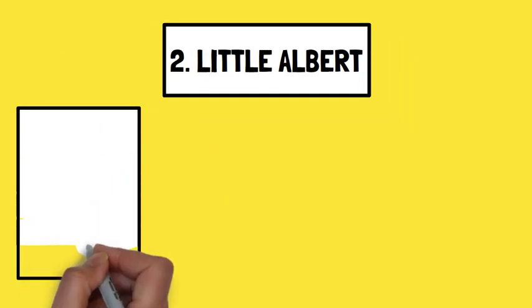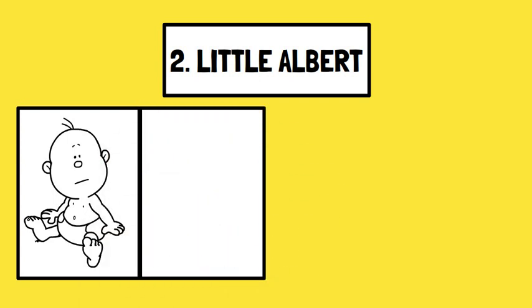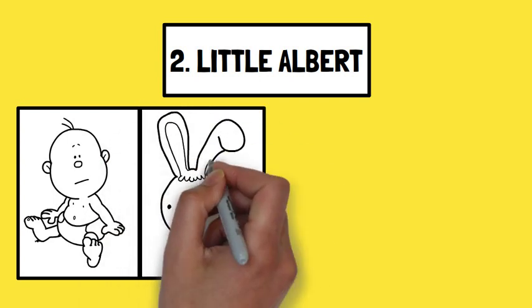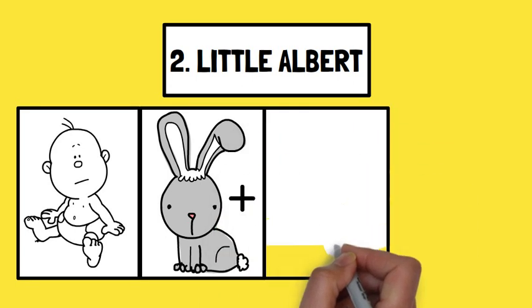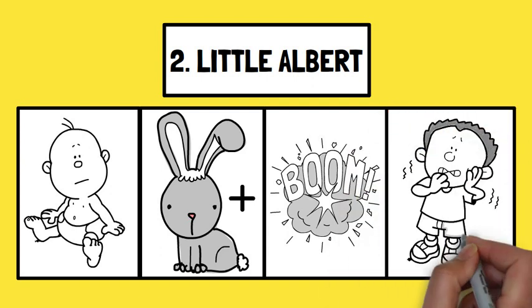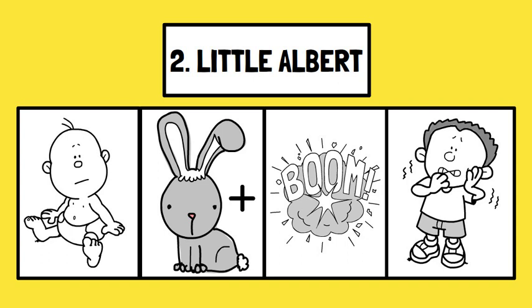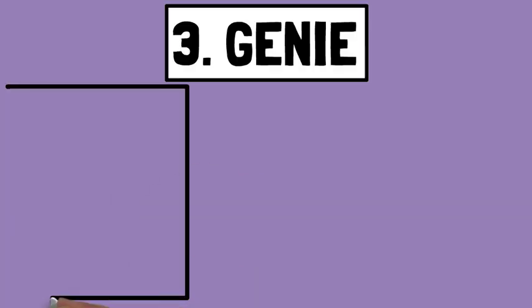Example two: Little Albert. Little Albert was an infant who was the subject of a famous case study by John Watson, which aimed to investigate the development of fear in children. Watson exposed the infant to a white rat, a rabbit, and a variety of animals. Initially the infant showed no signs of fear, but after Watson presented the rat along with a loud bang, Little Albert became afraid of the rat. This case study sparked ethical concerns but contributed significantly to our understanding of classical conditioning.